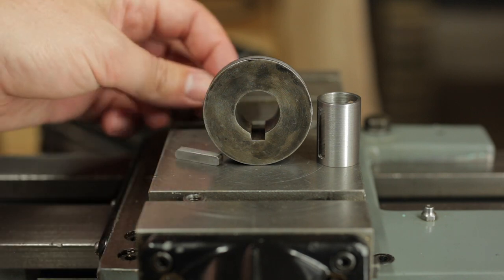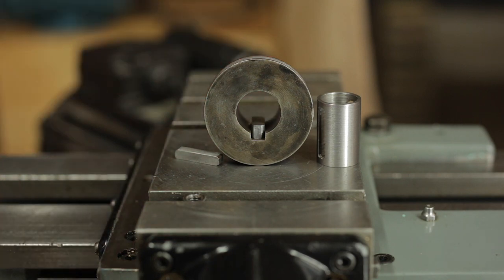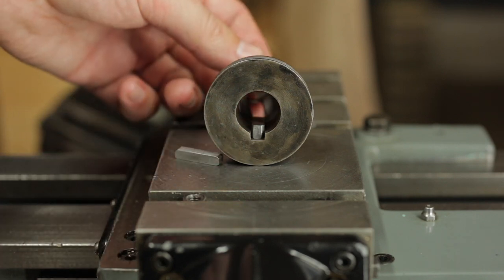Now the next thing we need to do is reduce the thickness of this key. Well, both keys actually. While previously it was running in this key slot, and the corresponding key slot on the motor, now it's only running in this keyway, and the thickness of the bushing.